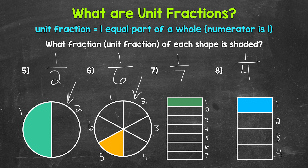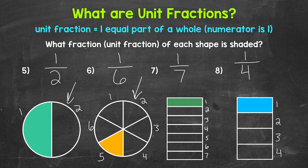For numbers seven and eight, those rectangles are the same size. If we compare those unit fractions, which is greater — one seventh or one fourth? We can see that one fourth is greater — it's a larger shaded part. When comparing unit fractions, whichever denominator is less, that will be the greater unit fraction. Four is less than seven, so one fourth is greater than one seventh. The rectangle for one fourth was only divided into four parts, making those parts larger compared to one seventh, which was divided into seven parts.